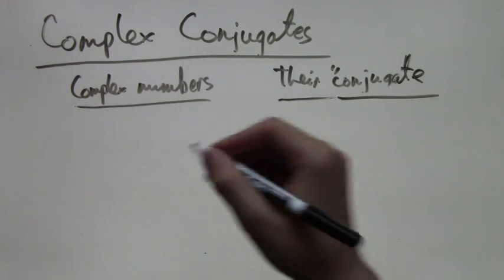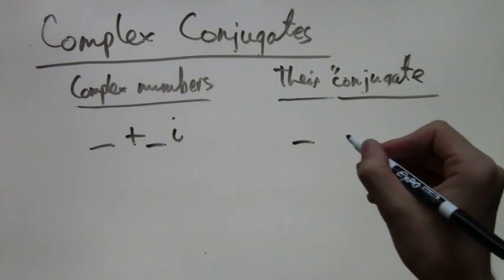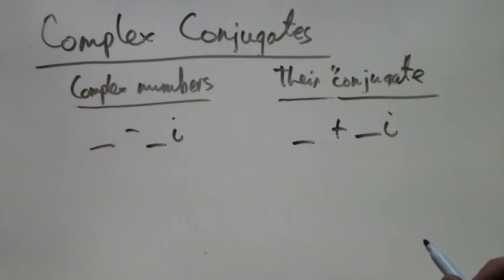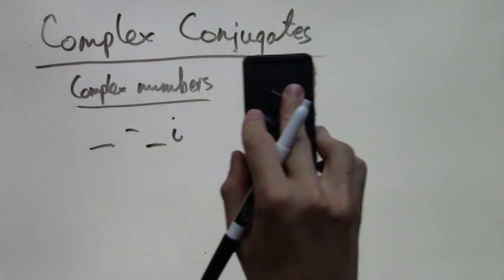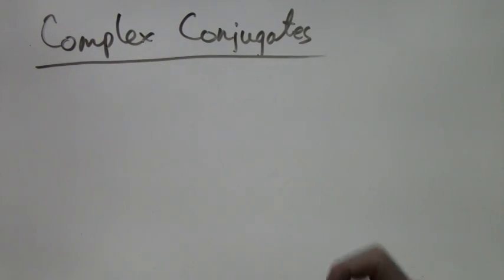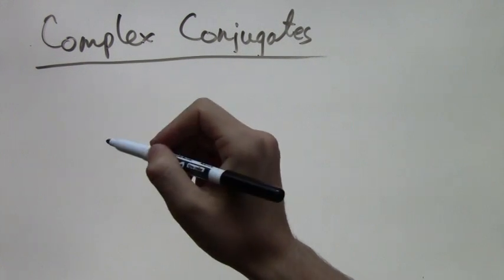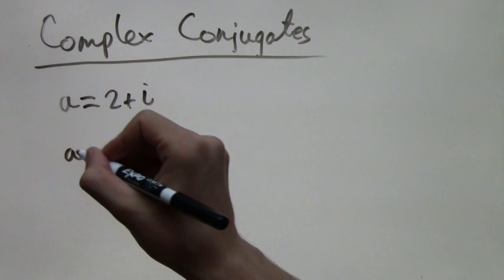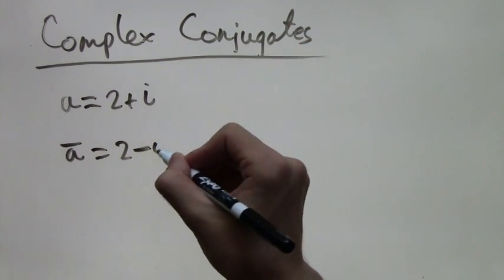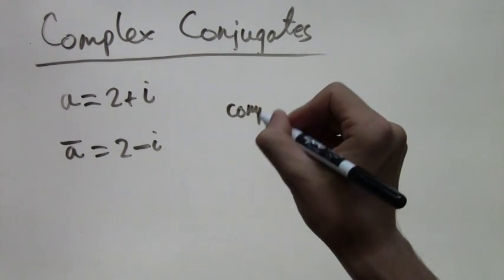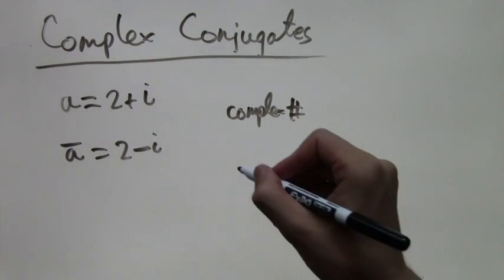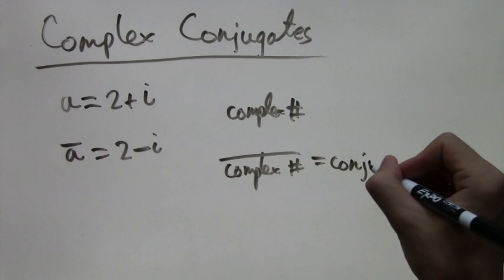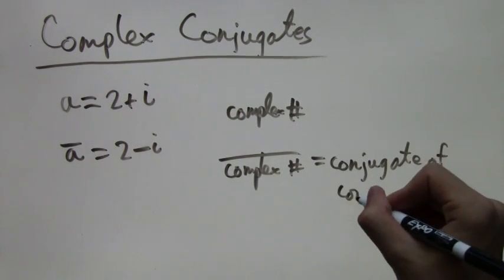In general, complex numbers are something plus something times i, and the conjugate would be something minus that same something times i — or if we started with a minus, we switch to a plus. Complex conjugates are denoted with a bar. So if a equals 2 plus i, then a-bar, the complex conjugate, is 2 minus i. When you put a bar on top of a complex number, you calculate its conjugate.